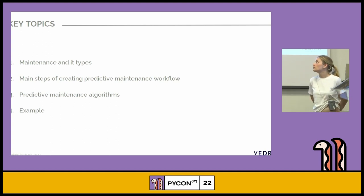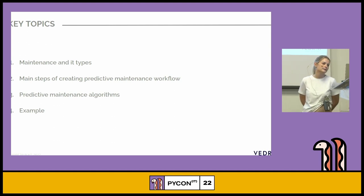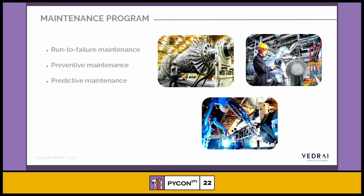We will look first at what maintenance is, the main steps of developing the workflow, and how it works in a real example. The world we live in today is highly dependent on machines or the systems that control them, and unfortunately machines are subject to wear or failure. Nowadays there are three maintenance programs: run-to-fail, preventive, and predictive maintenance.